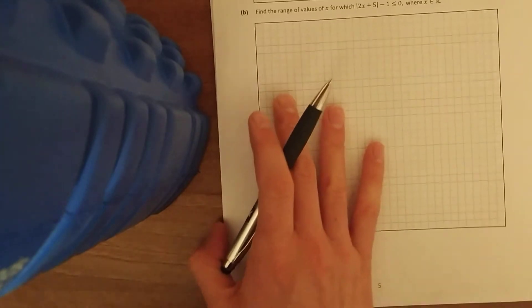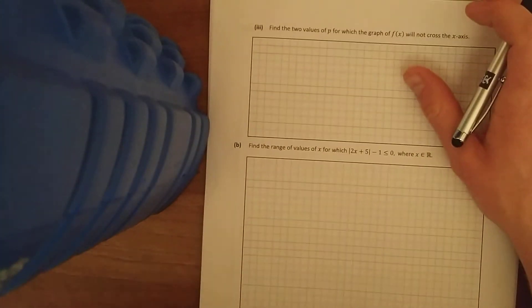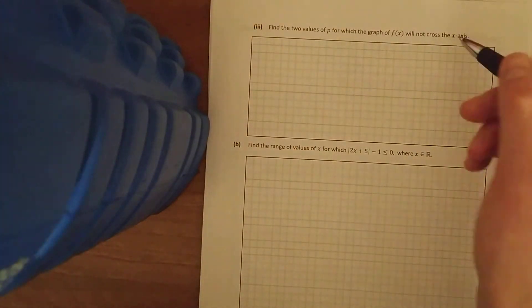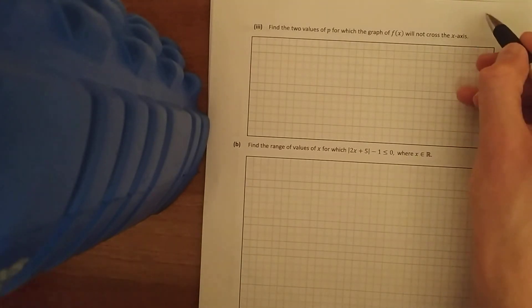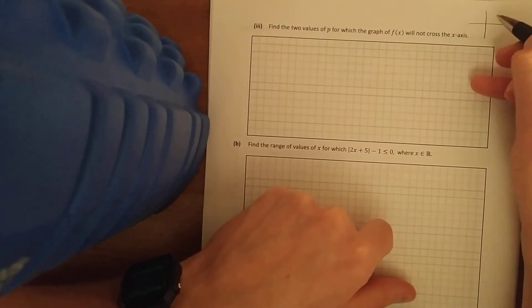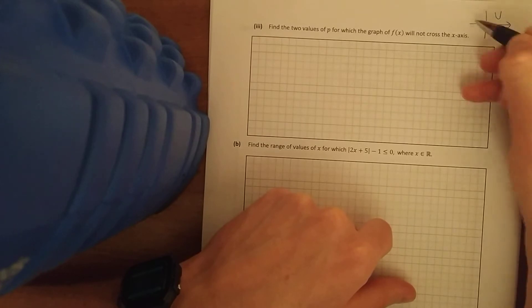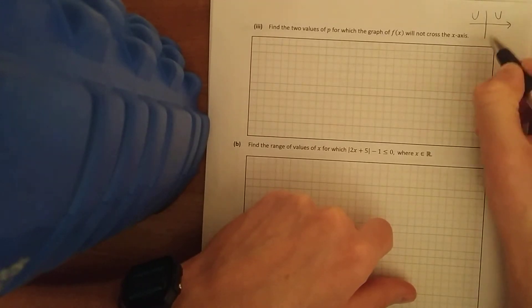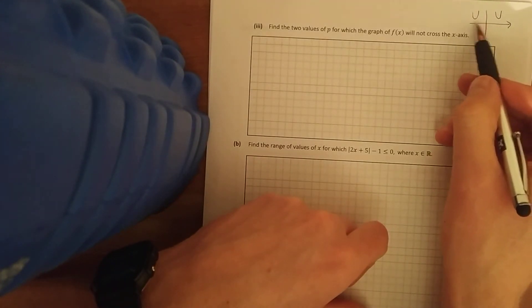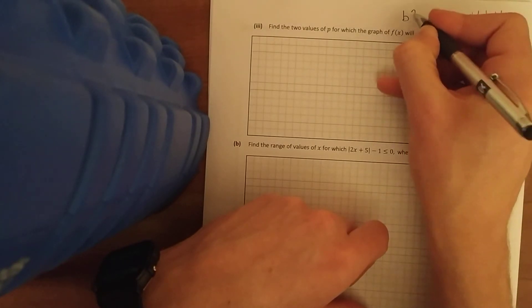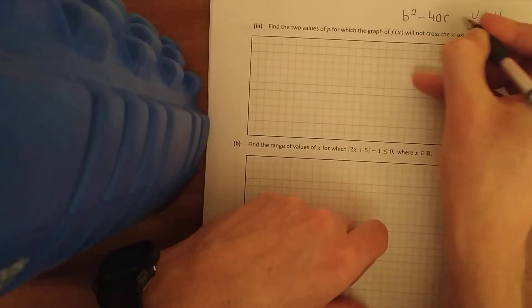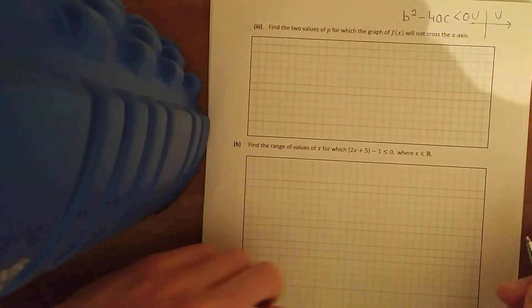Now third bit, find the two values of p for which the graph does not cross the x-axis. Now we can see it's a quadratic, it's a u shape, so if it doesn't cross the x-axis it's up in these two quadrants. Now you might remember from your nature of roots, it doesn't cross the x-axis, the roots are imaginary, so b squared minus 4ac is less than zero.